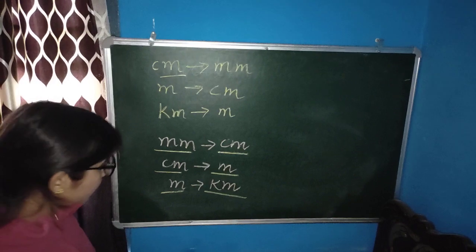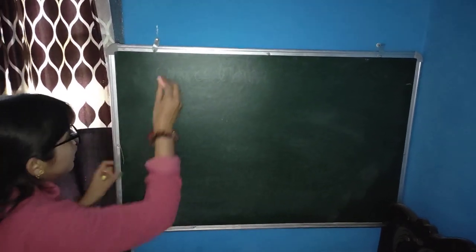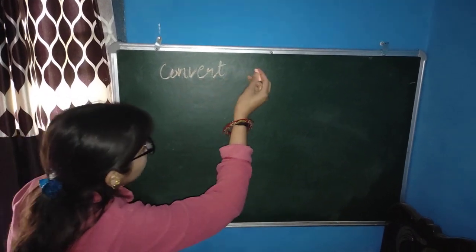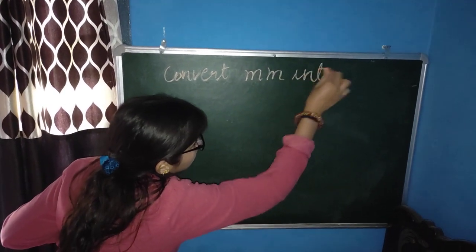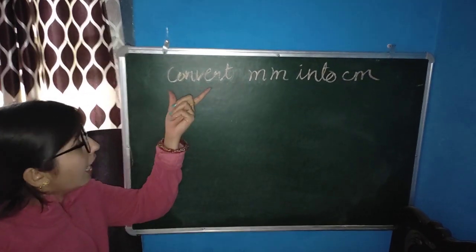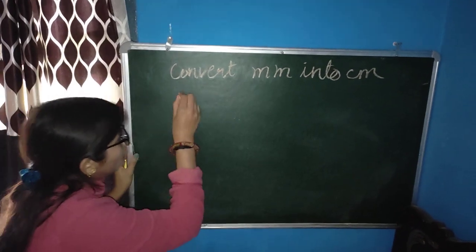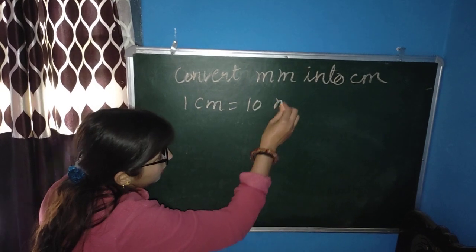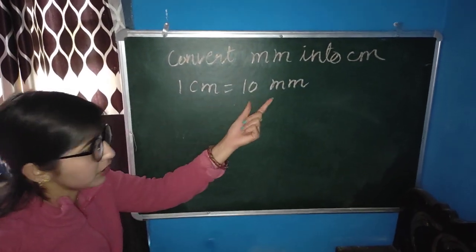So students, let's start. Our first topic is how to convert millimeter into centimeter. We know that 1 centimeter is equal to 10 millimeters.